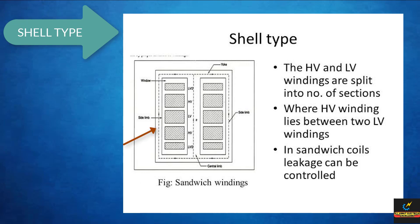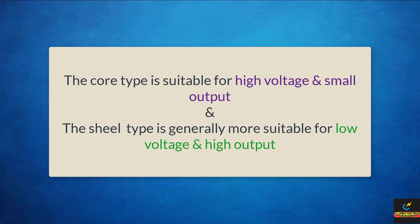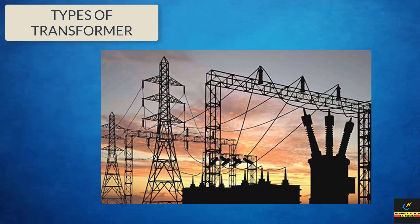The other two limbs are acting simply as a low reluctance flux path. Now, the choice of type of core, whether core or shell type, will not generally affect the efficiency of the transformer. The core type is generally more suitable for high voltage and small output, while the shell type is generally more suitable for low voltage and high output.